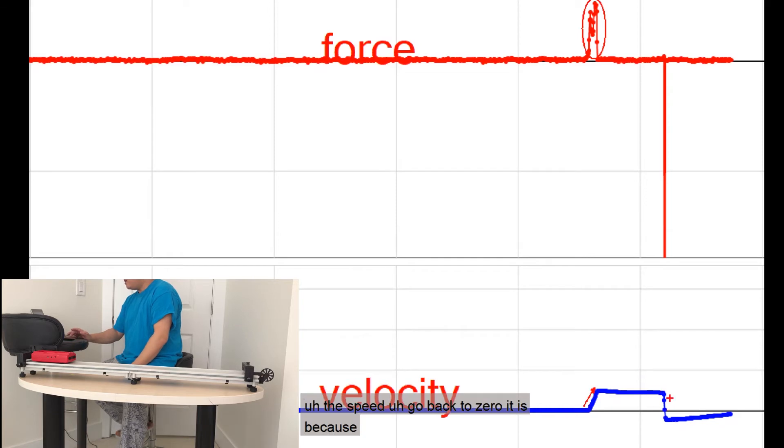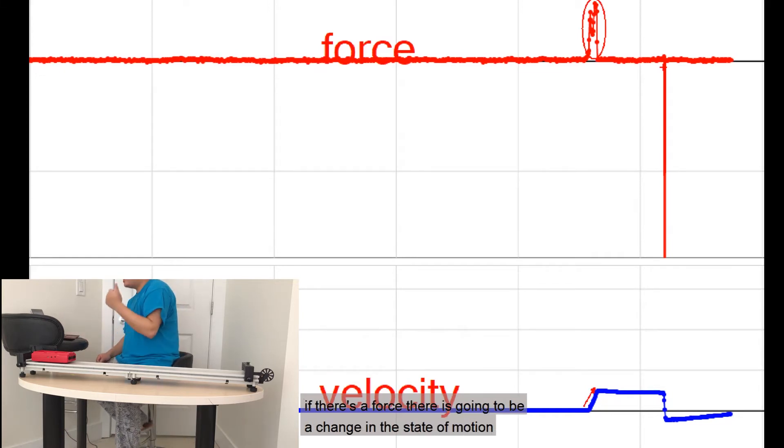And the speed goes back to zero. It is because on the first graph, you can see there's a force in the opposite direction exerted by the end stop of the track. Again, consistent with Newton's first law. If there's a force, there's going to be a change in the state of motion. Otherwise, state of motion remains the same.